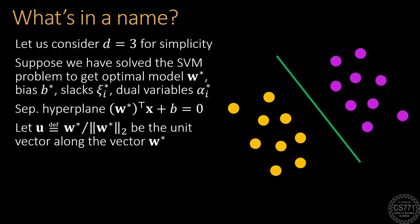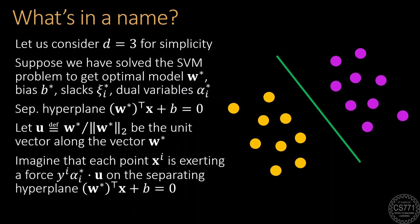This gives us the separating hyperplane with the equation w* transpose x plus b equals zero. Let u be the unit vector along w*. Now, imagine that each data point x_i is exerting a force on the separating hyperplane equal to y_i times alpha_i* times u. Note that since the force has the term y_i in it, data points of opposite labels exert forces in opposite directions, although all forces are parallel to u.